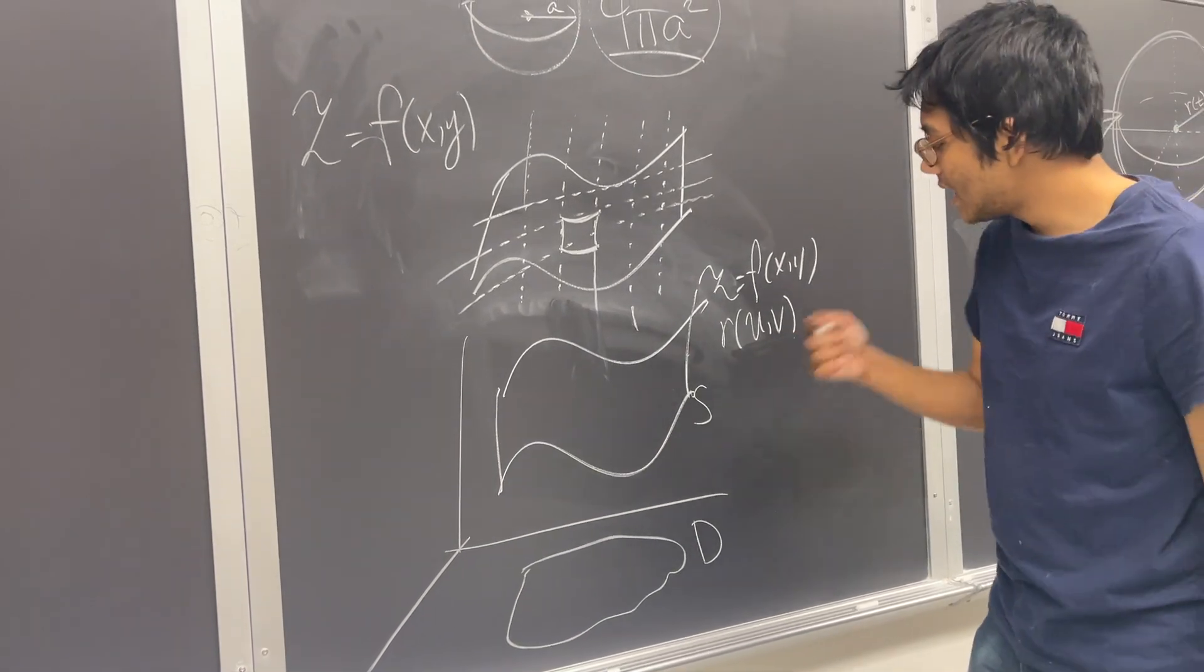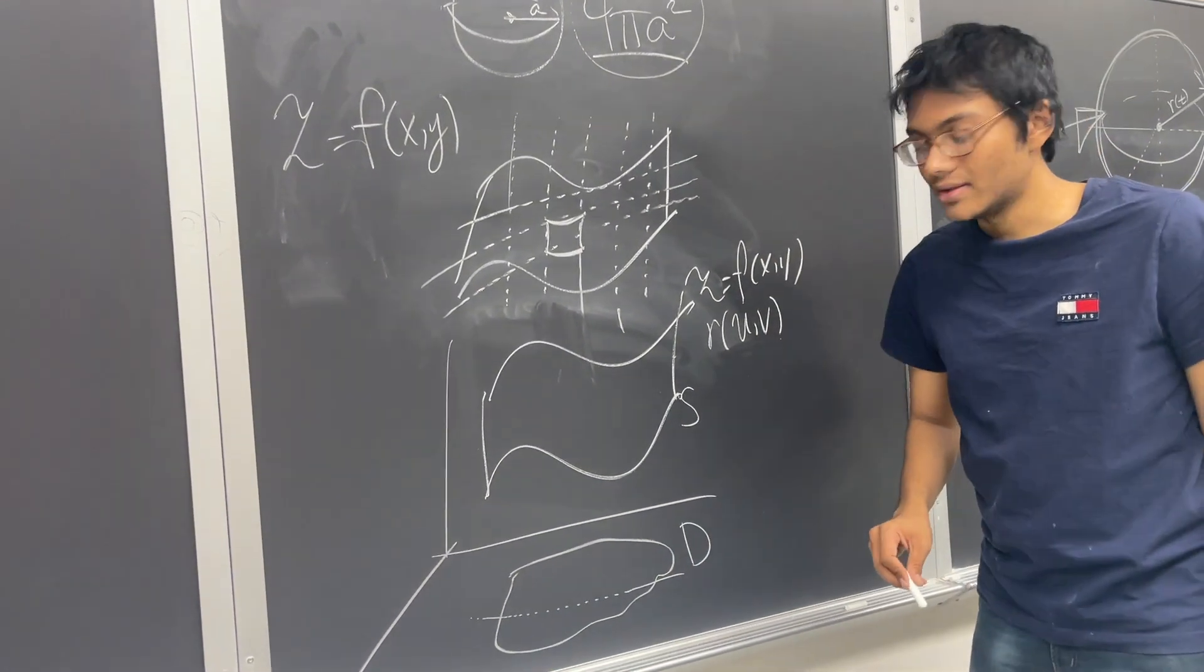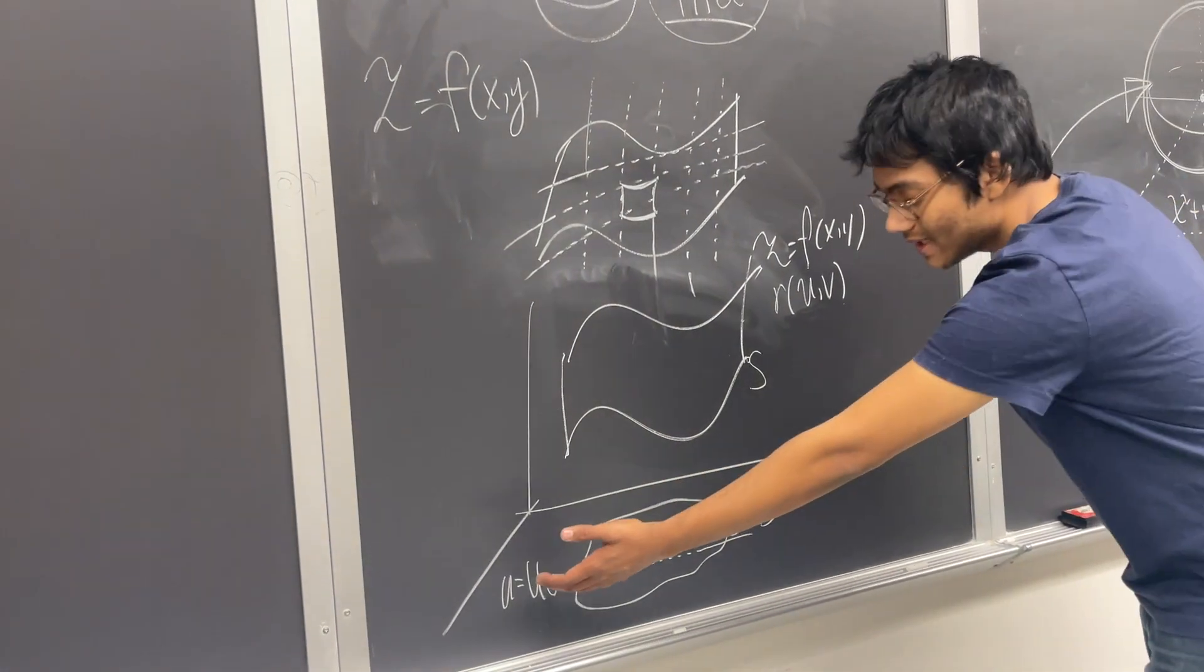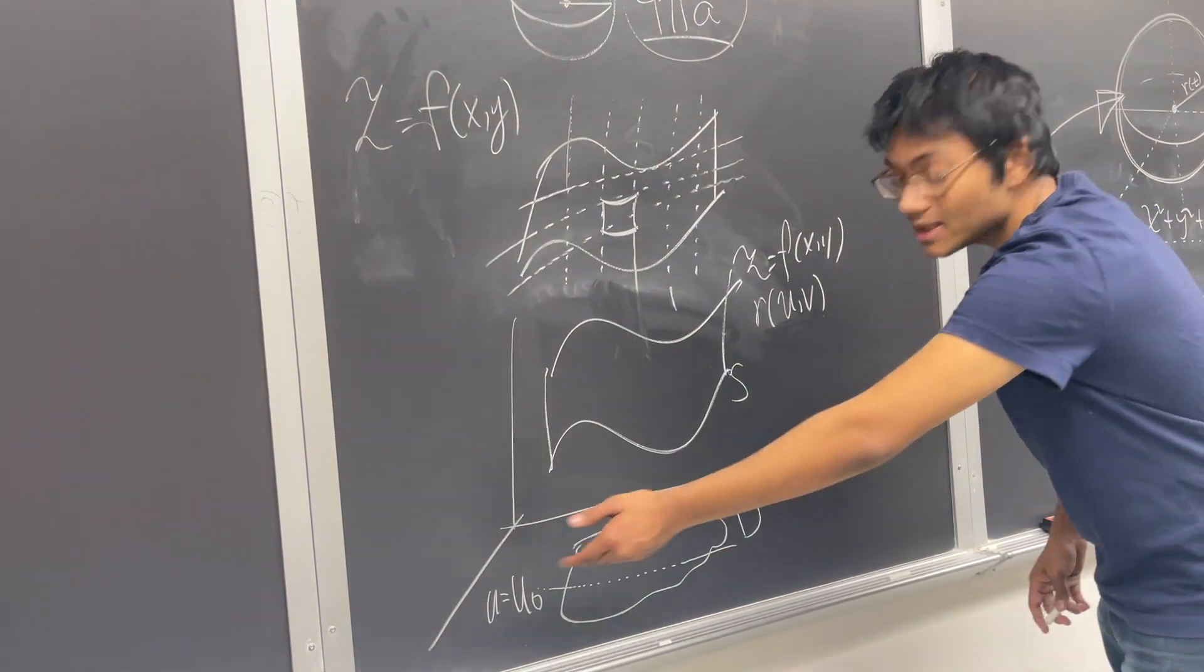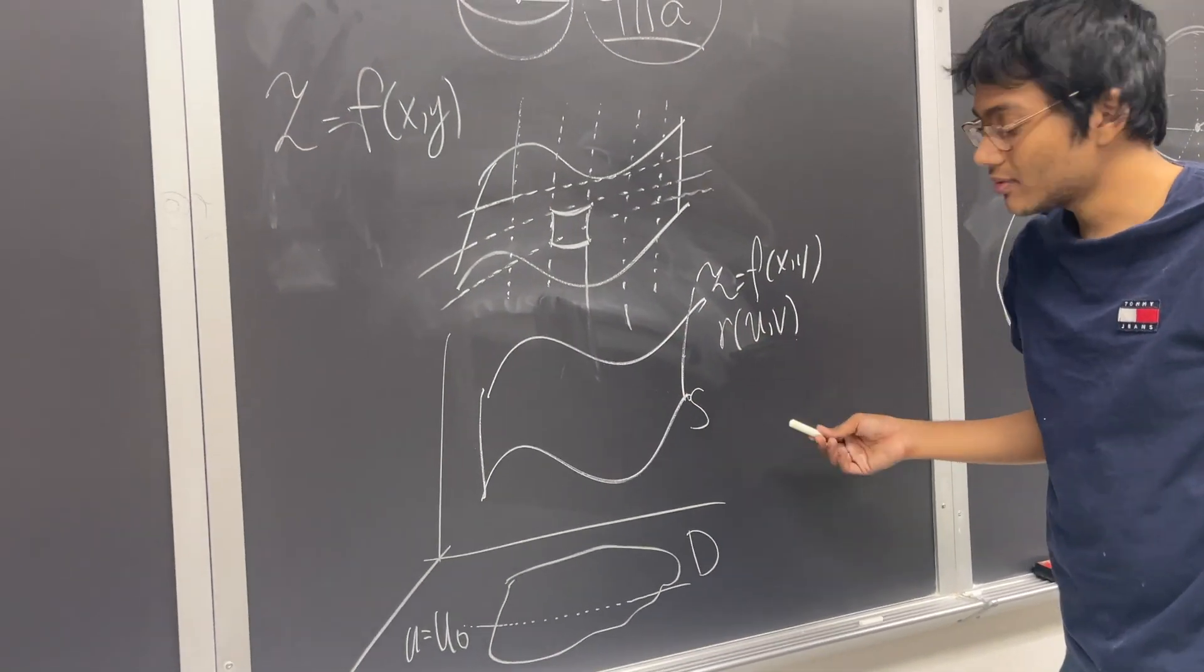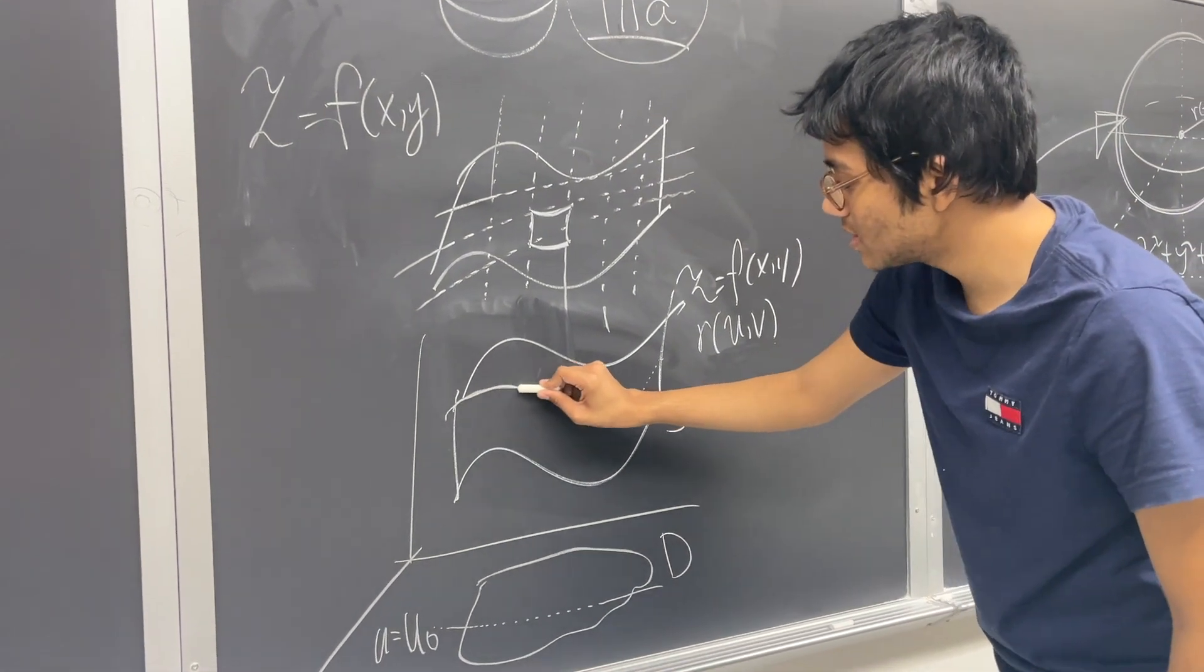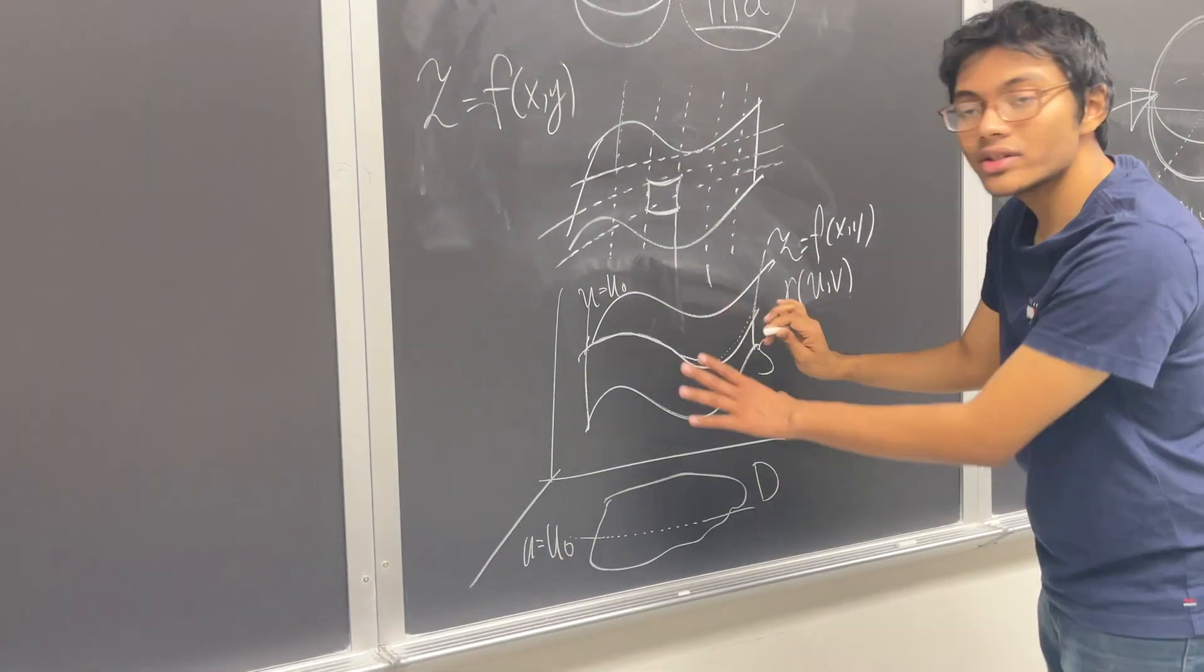So what's happening? What's happening is that let's say I have a kind of constant line here on my domain. We'll call that u = u₀. The reason why we're doing this is because u = u₀ is keeping one of my variables constant. And when I keep one of my variables constant on the domain, what do I get on my surface? I don't get a line. What do I get? I get a space curve. That's what I get. I get a space curve.